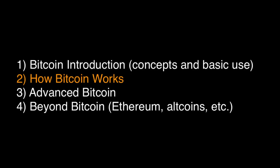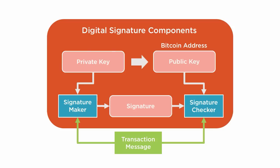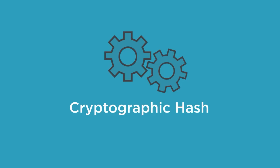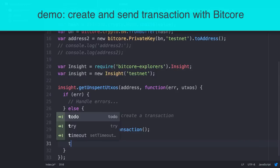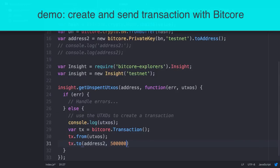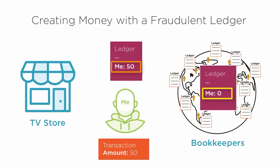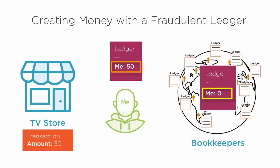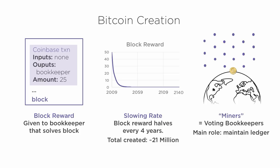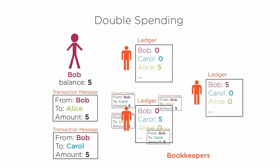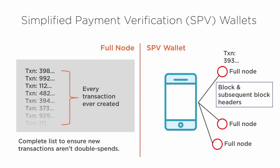The second module dives into how Bitcoin works under the hood, explaining the key foundational concepts that underlie Bitcoin, like digital signatures and cryptographic hashes, and how those are used to create transactions and secure the blockchain. I use a JavaScript library called BitCore to show you how to programmatically make an address and send a transaction. I answer some questions like what keeps the people running the Bitcoin network from stealing your money, and how you can create a new Bitcoin address without checking to see if someone else hasn't already used it. The module also includes information about mining, double spend attacks, and SPV wallets, which is how you can trust mobile phone wallets.